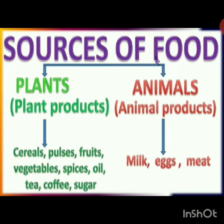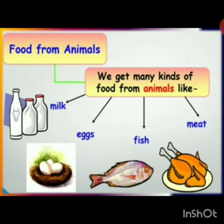In the previous class you learned about plant products. Today we will discuss about animal products. We get many kinds of food from animals like milk, eggs, fish, and meat.